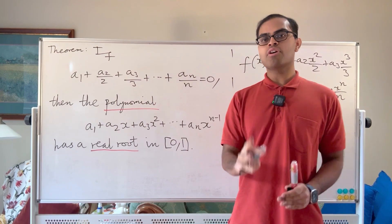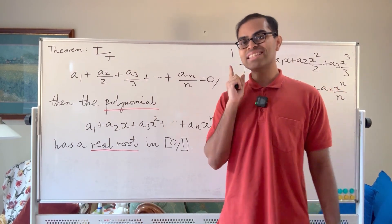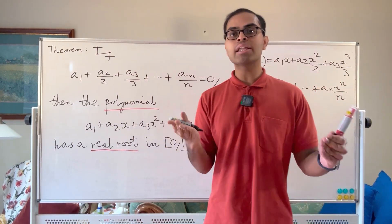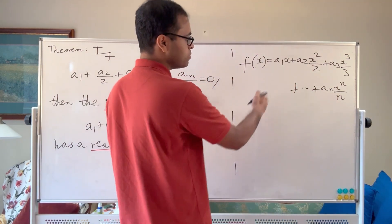There are three things we need to know about our function. Number one is it's differentiable on the closed interval [0,1]. It's after all a polynomial, so it's differentiable.